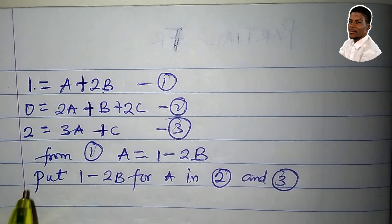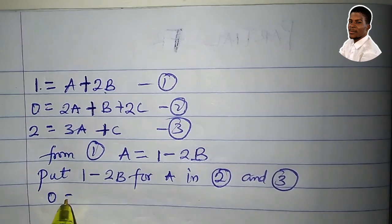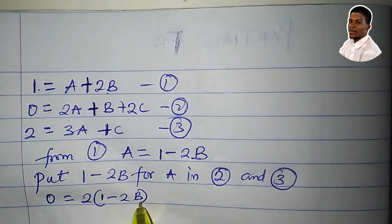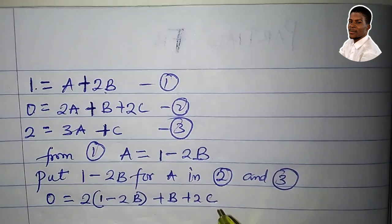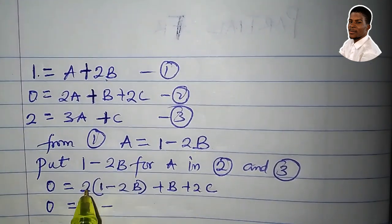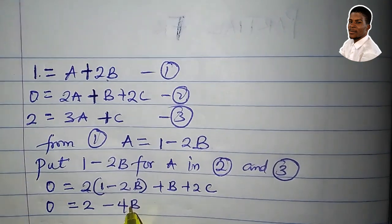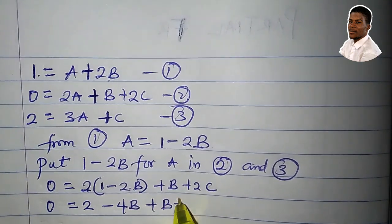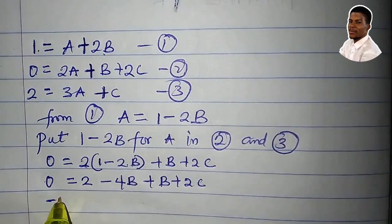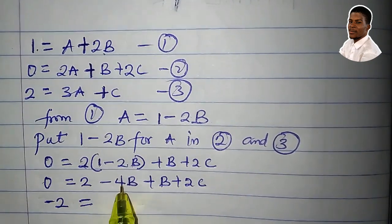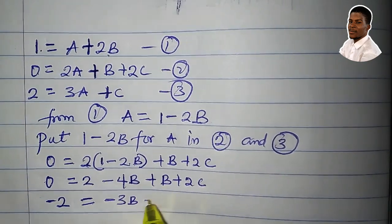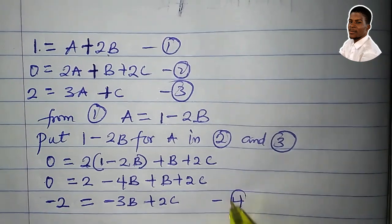Substituting into equation 2: 0 = 2(1 − 2b) + b + 2c. Expanding: 0 = 2 − 4b + b + 2c. Rearranging: −2 = −3b + 2c. We'll call this equation 4.